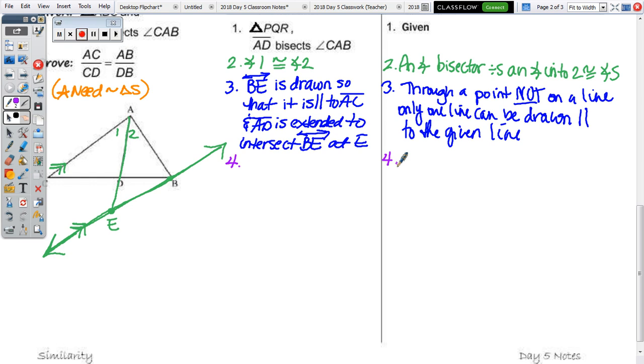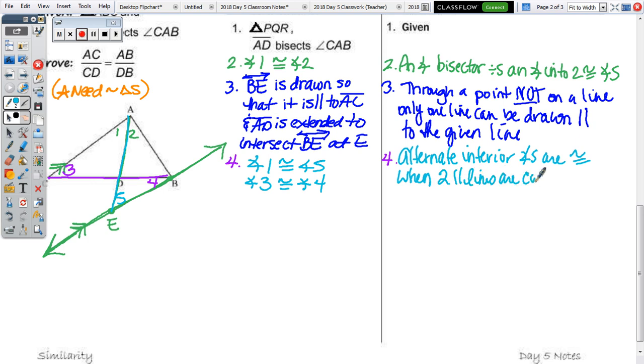Now, we have some alternate interior angle pairs. So, if AC is parallel to BE, let's look at transversal BC. So, transversal BC, we've got angle 3 congruent to angle 4. If I look at transversal AE, we've got 1 congruent to let's call this a 5. So, I'll add that. We've got angle 1 congruent to angle 5 and angle 3 congruent to angle 4 because alternate interior angles are congruent when two parallel lines are cut by a transversal.